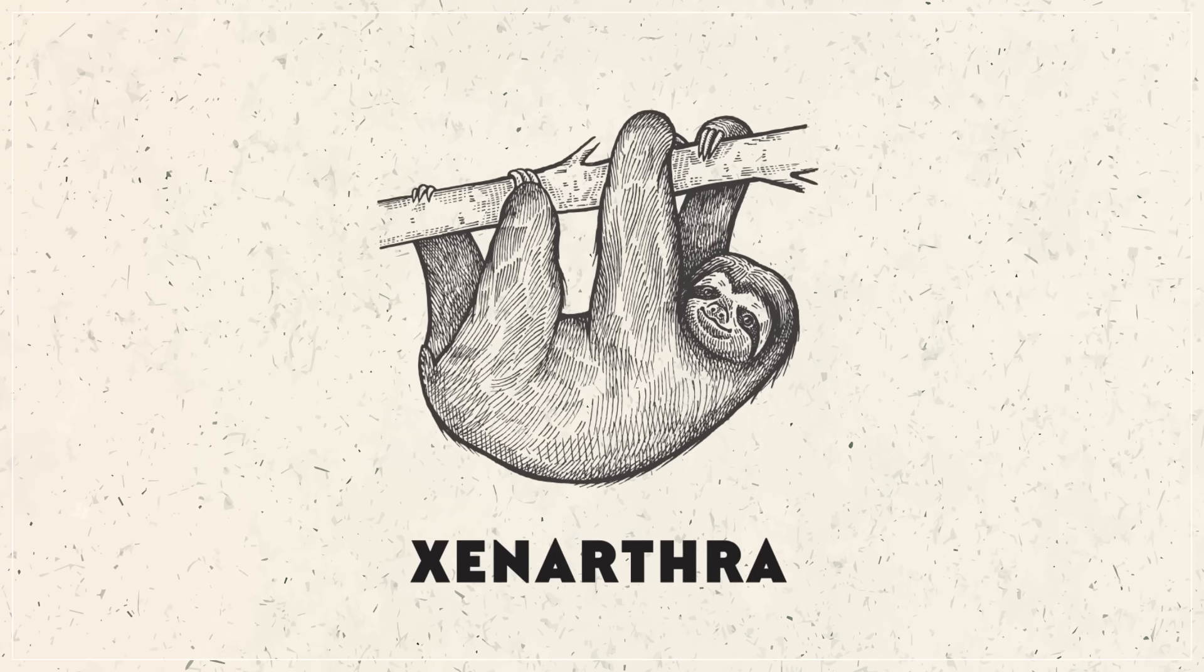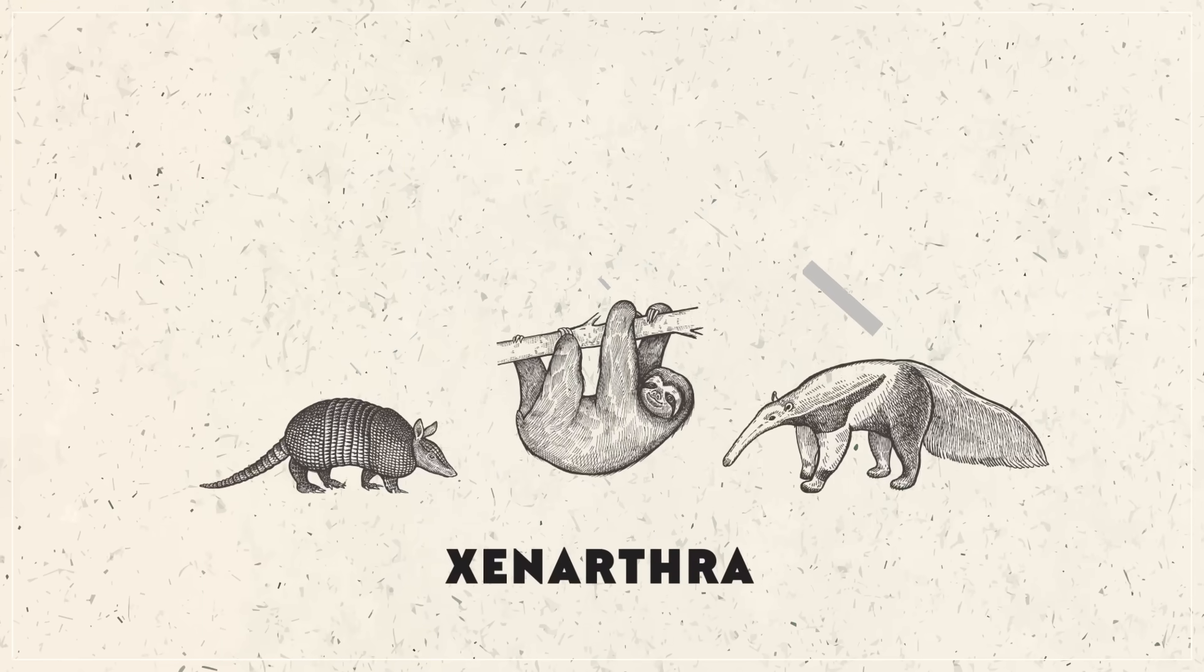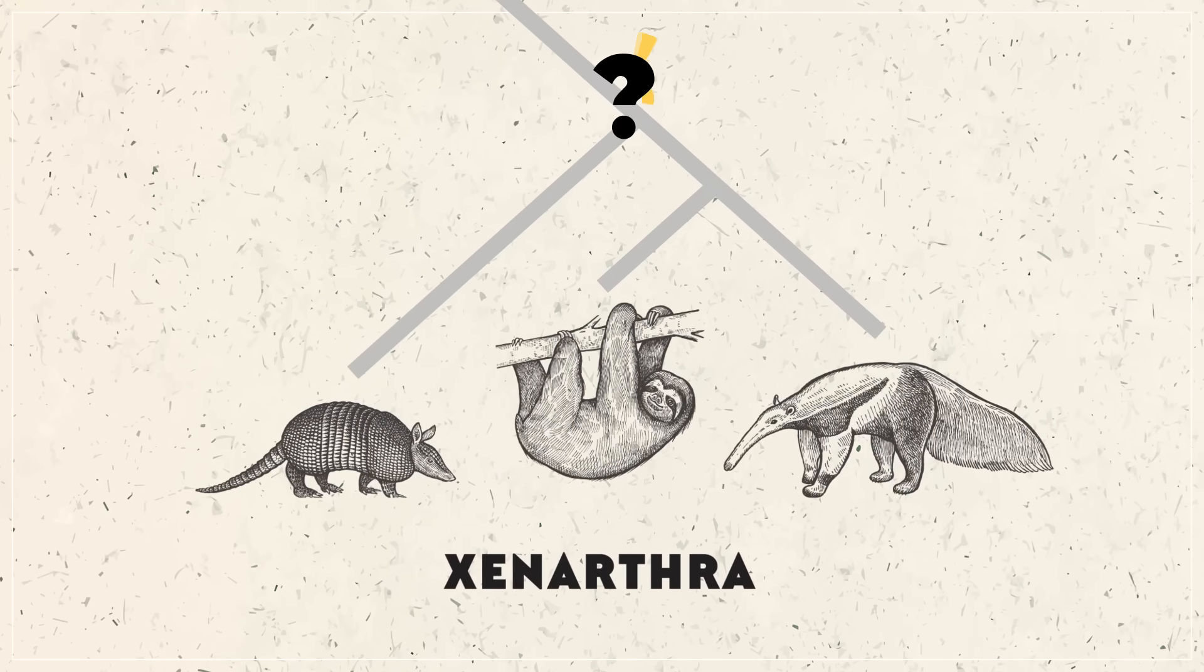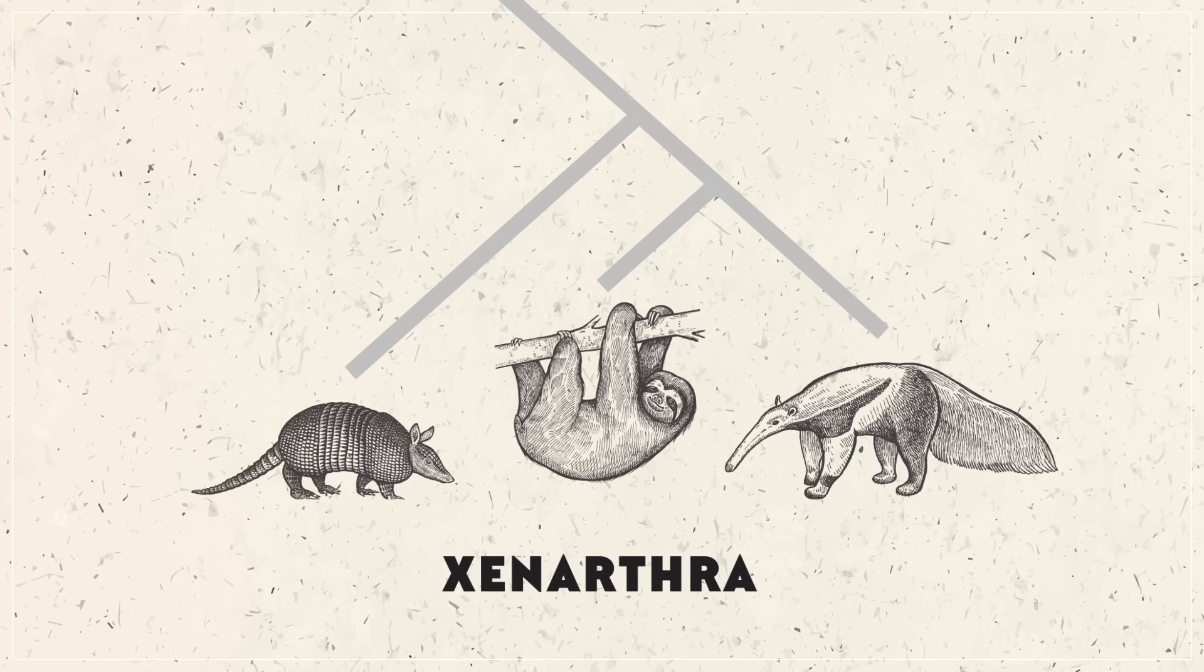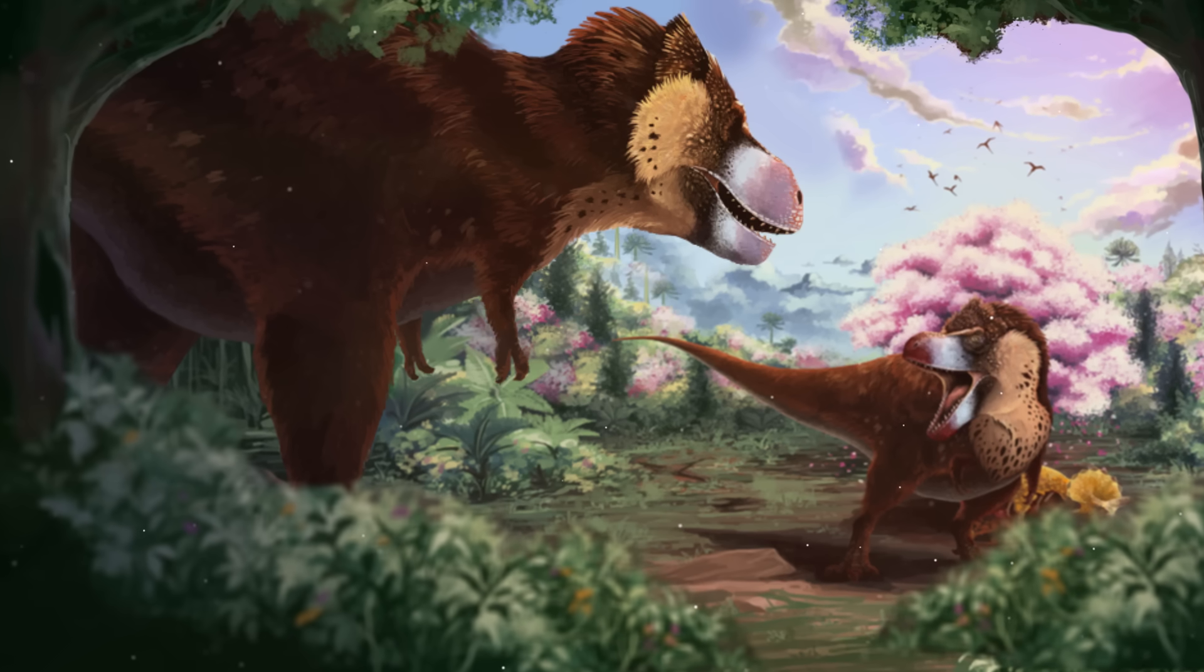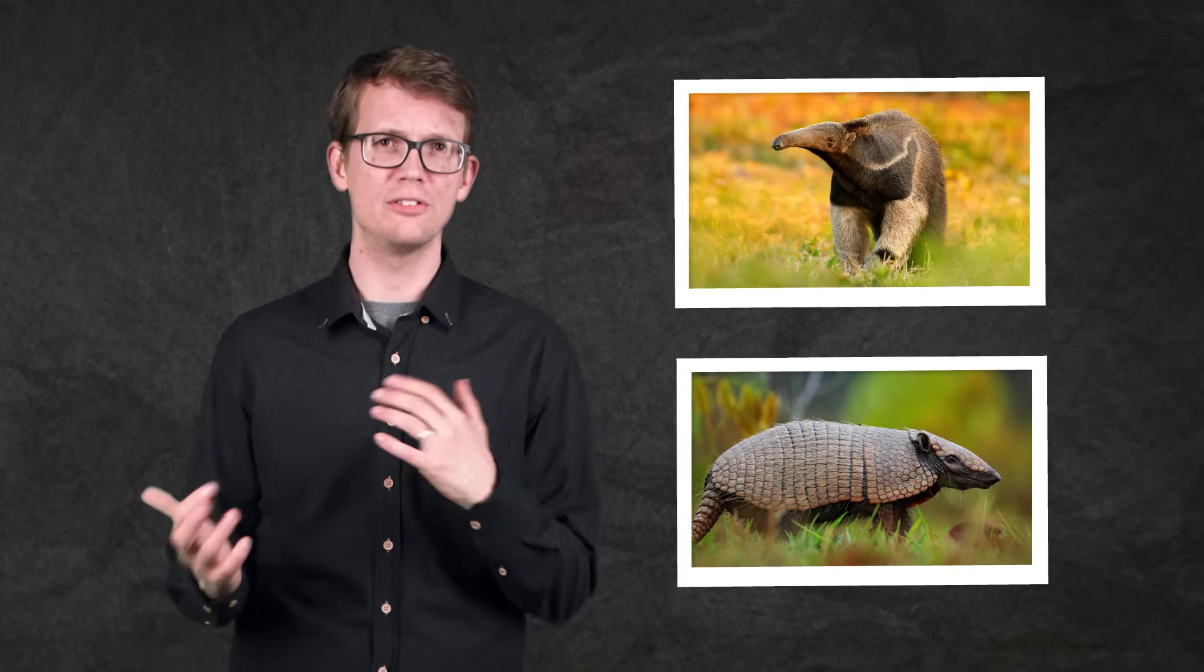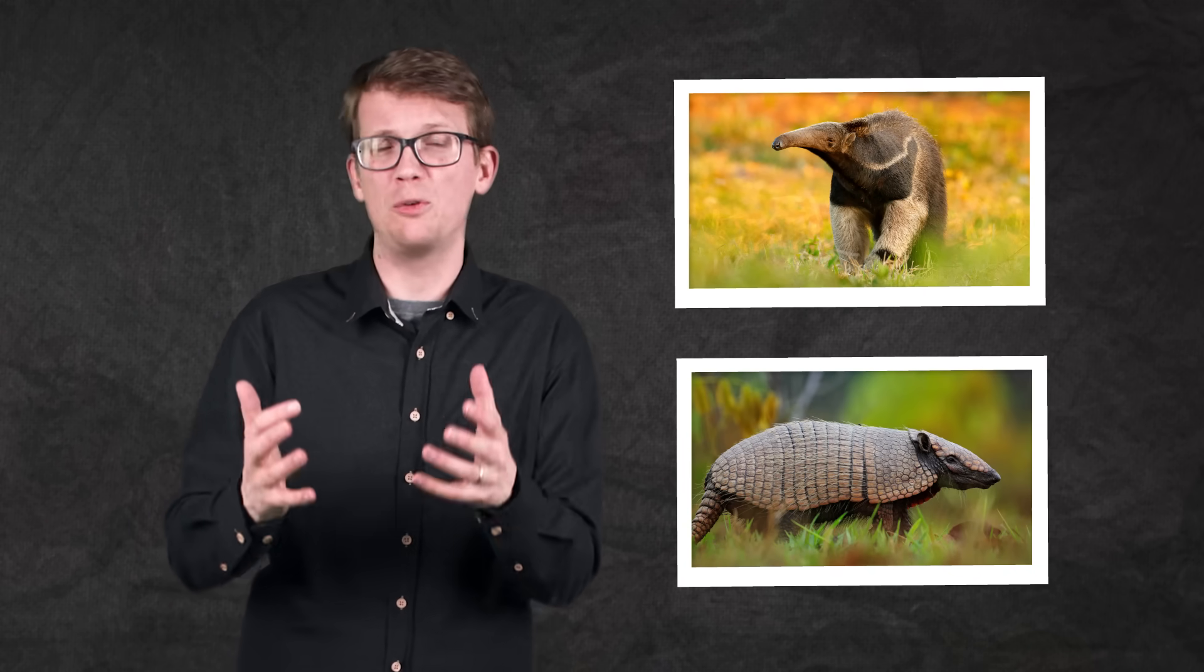Sloths are members of the order Xenarthra, which also includes armadillos and anteaters. And it's not clear what the last common ancestor of all Xenarthrans was. But genetic studies of living species suggest that it probably lived more than 65 million years ago, which means that this early Xenarthran lived among the feet of the last non-avian dinosaurs. But it probably resembled an anteater or an armadillo more than a modern sloth, in that it was really built for digging.